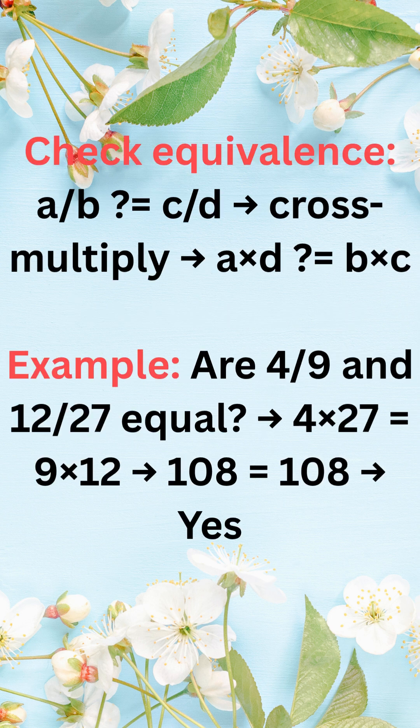To check, cross multiply. If a times d equals b times c, the fractions are equivalent.